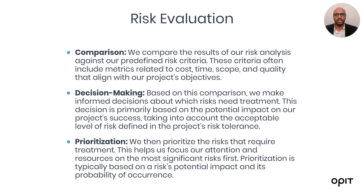Then there's decision-making. Based on this comparison, we make informed decisions about which risks need to be treated. This decision is primarily based on the potential impact on our project success, taking into account the acceptable level of risk defined in our risk tolerance. And there's prioritization — we prioritize the risks that require treatment, helping us focus our attention and resources on the most significant risks first, typically based on potential impact and probability of occurrence. At the end of this stage, we should have a clear understanding of which risks need attention and in what order, setting us up to develop appropriate management strategies.